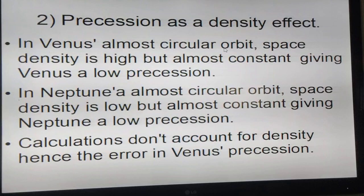Venus has an almost circular orbit. In terms of density, the space density is high but almost constant, so it has a low precession. Neptune also has a circular orbit but the space density is low compared to high. But again it's almost constant, so it has a low precession.